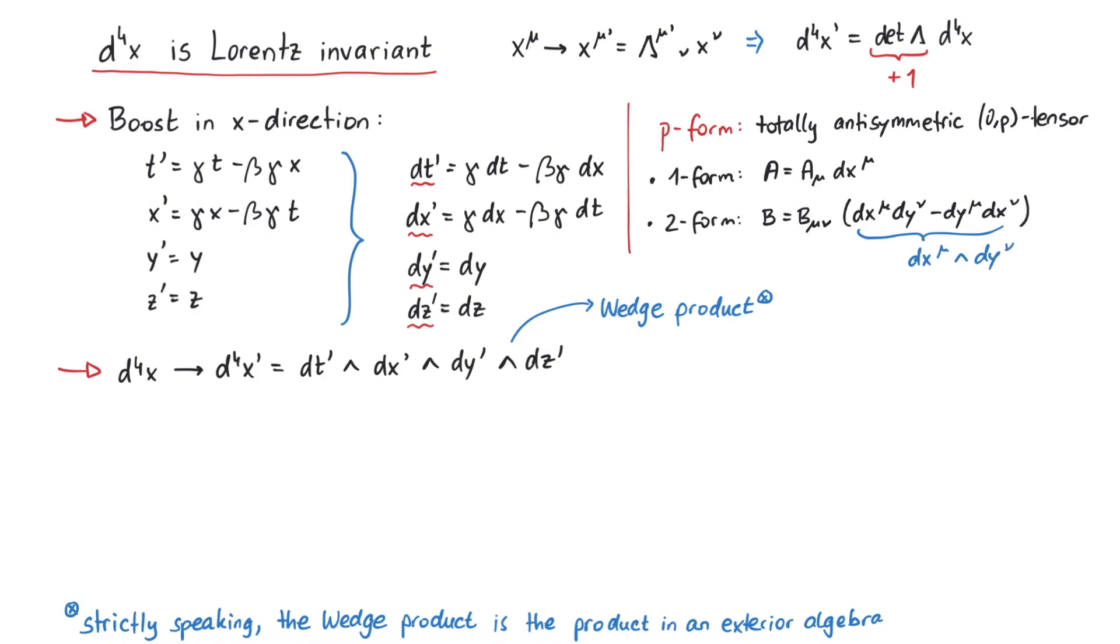The only thing we need to know about the wedge product in this video is that if we exchange two terms, we pick up a minus sign, since they are actually written in an antisymmetric way.